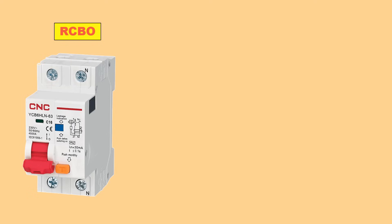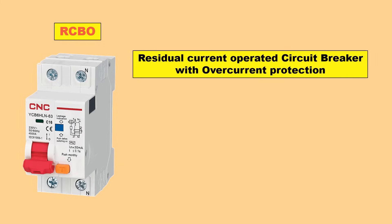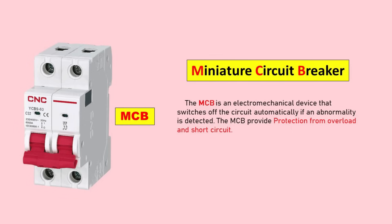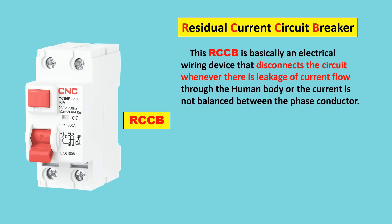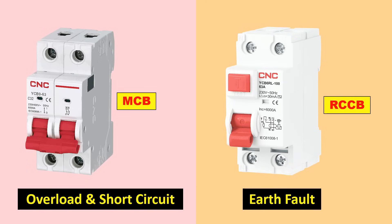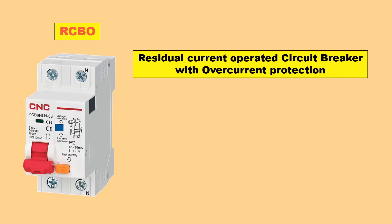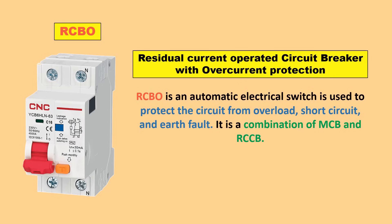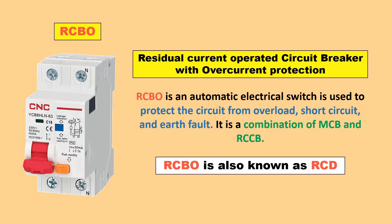Next device is RCBO. Full form of RCBO is Residual Current Circuit Breaker with Overload Protection. MCB provides protection from overload and short circuit, and RCCB provides protection from earth fault. If you want all three protections — earth fault, overload, and short circuit — in one device instead of using MCB and RCCB separately, then you have to buy a RCBO. This RCBO is also known as RCD, and they are not two different devices.